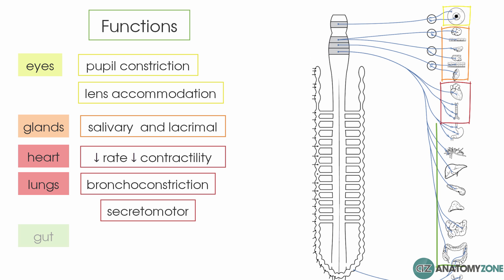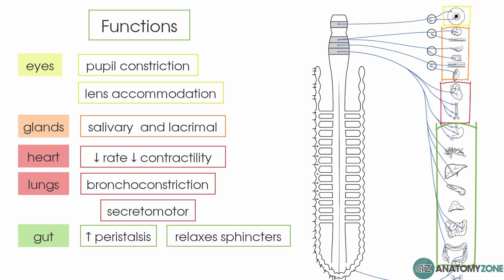In the gut, the parasympathetic division has motor function to the gut wall, increasing peristalsis and relaxing the sphincters. It also has a secretomotor function to the glands of the stomach and the small intestine.